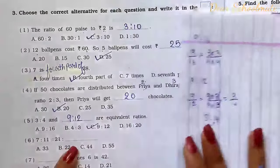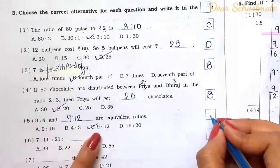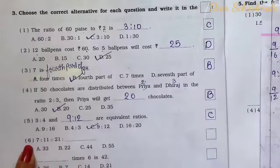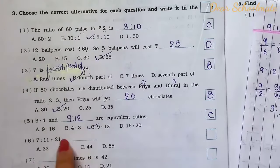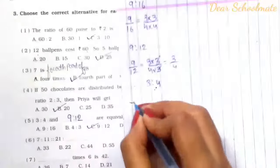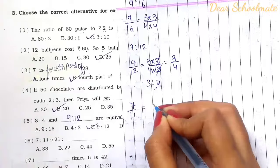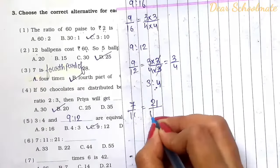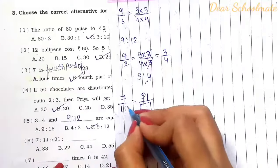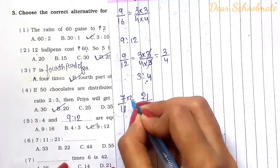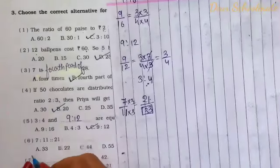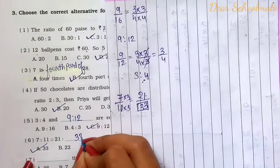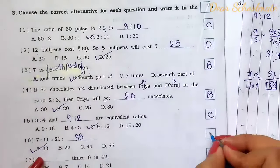Number 6: 7 is to 11 is in proportion to 21 is to dash. We have 7 by 11 and 21 by blank. Since 7 times 3 is 21, we multiply 11 by 3 to get 33. The missing number is 33. Answer is A.